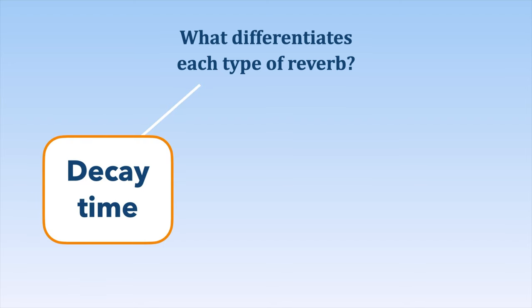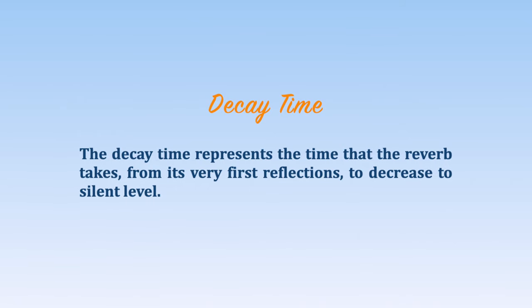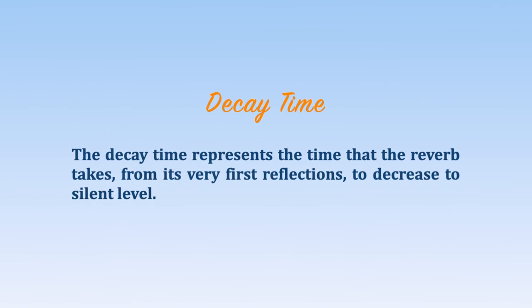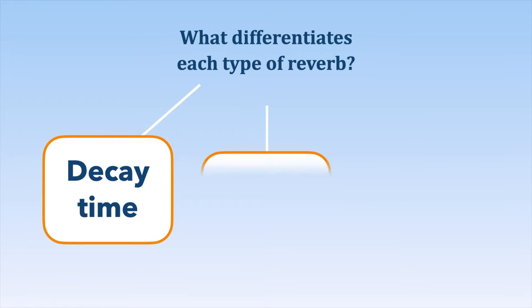You will also hear how different these five types of reverb sound. What makes each type of reverb different comes down to a few key parameters. The first one is the decay time — also called reverb time. This parameter represents the time the reverb takes from its very first reflections to decrease to a silent level. Some types of reverb are super short, others pretty long, and it's definitely the main parameter that differentiates each type.